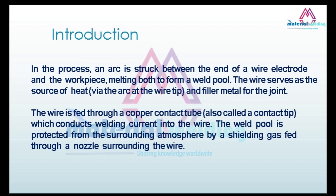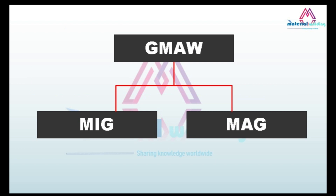In the process, an arc is struck between the end of a wire electrode and a workpiece, melting both to form a weld pool. The wire serves as the source of heat via the arc at the wire tip and filler metal for the joint. The wire is fed through a copper contact tube, also called a contact tip, which conducts welding current into the wire. The weld pool is protected from the surrounding atmosphere by a shielding gas fed through a nozzle surrounding the wire. GMAW is classified into two sub-processes: MIG (metal inert gas welding) and MAG (metal active gas welding). If inert gas such as pure argon or helium is used, it is called MIG. If carbon dioxide or a mixture of argon plus carbon dioxide is used, it is called MAG.